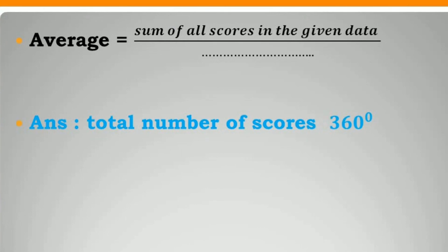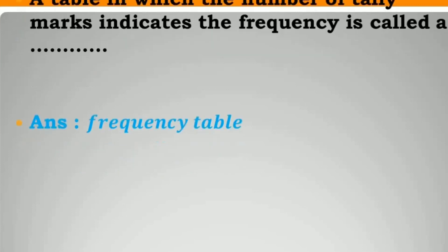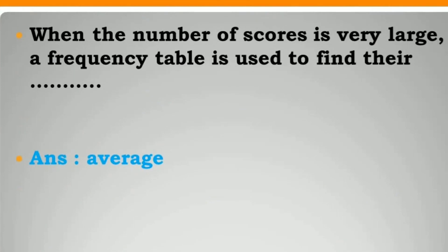Average is equal to sum of all scores in the given data divided by total number of scores. A table in which the number of tallmarks indicates the frequency is called a frequency table. When the number of scores is very large, a frequency table is used to find their average.